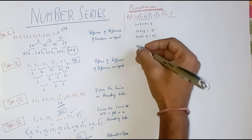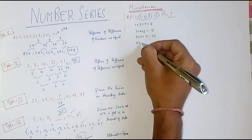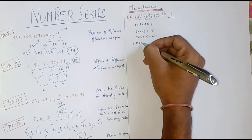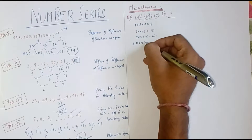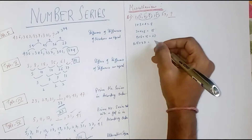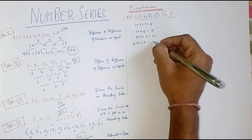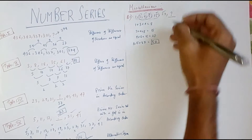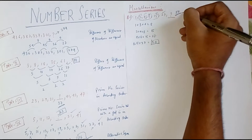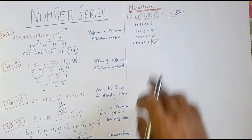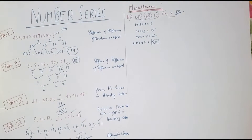So the missing number will be 8 plus 15 plus 27, which makes 50. So 50 is the answer. In this way we get the missing number.